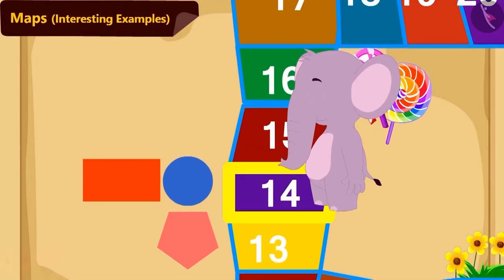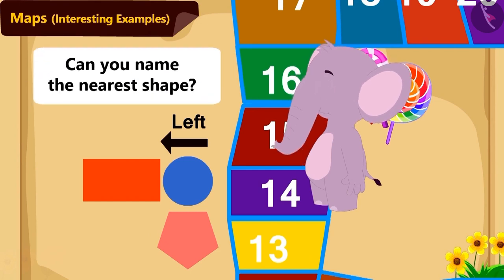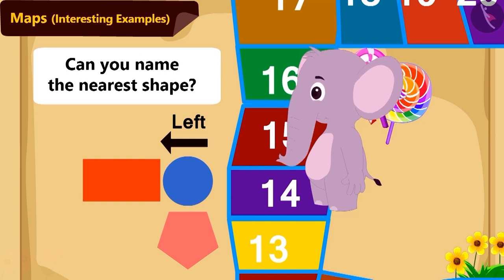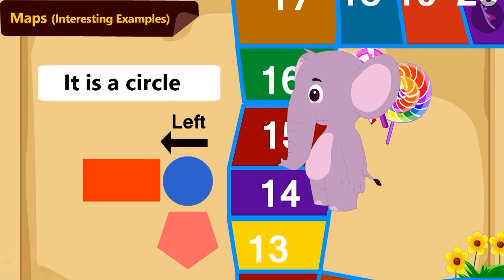On the left side of tile number 14 are paintings of 3 shapes. Among them, can you name the shape nearest to number 14? Yes! It is a circle.